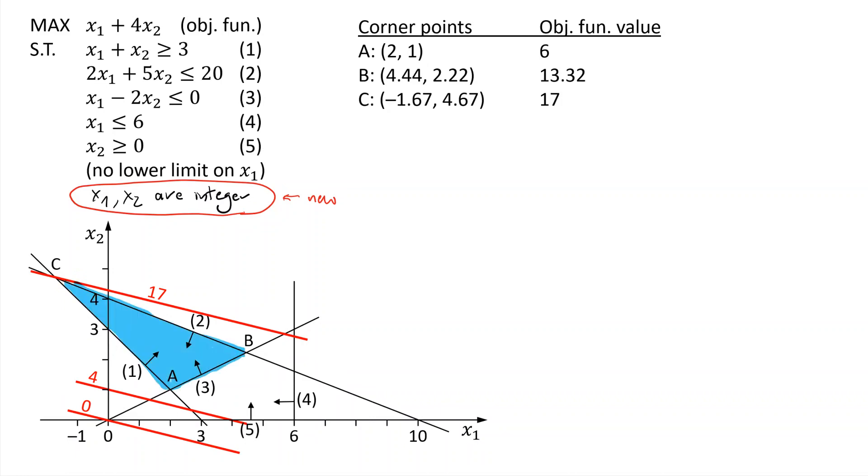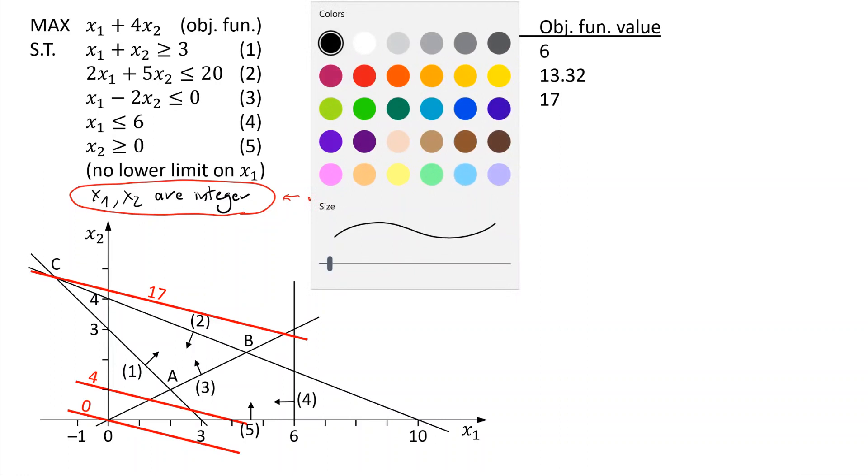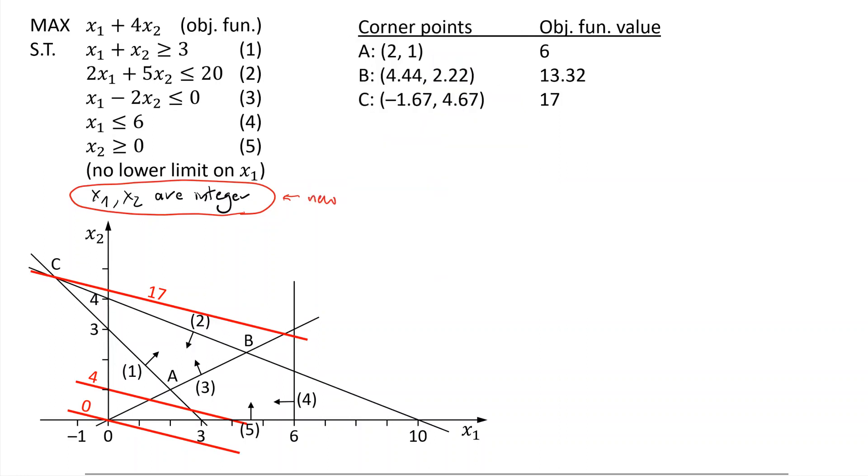What I'm going to do here, first of all, is I'm going to clear this blue area. Remember, I still have to be within the old blue area. However, I also want to have integer solutions. So one point that was within this area is this point A. Let's mark it. I'm going to use this blue color. Point A is (2, 1). x1 is 2, x2 is 1. This point is integer feasible.